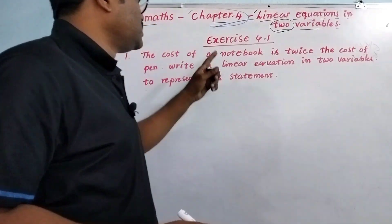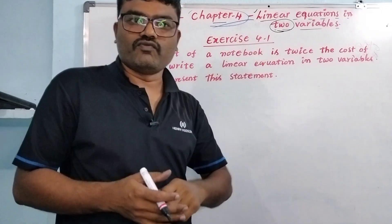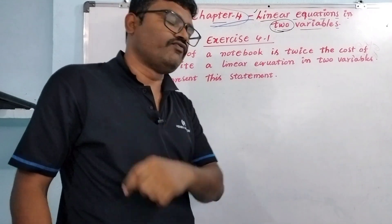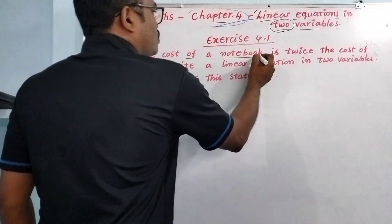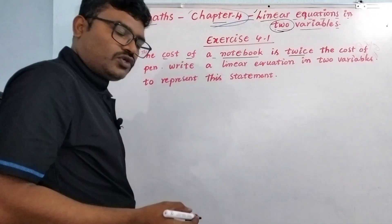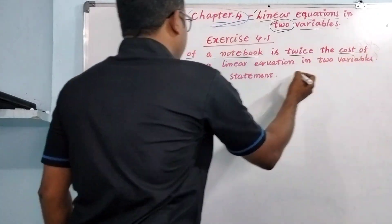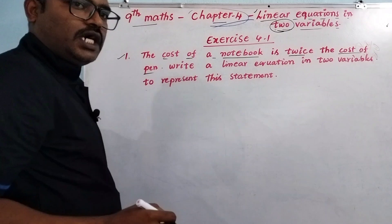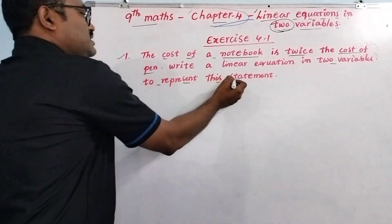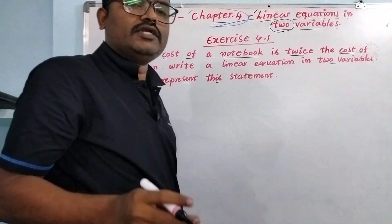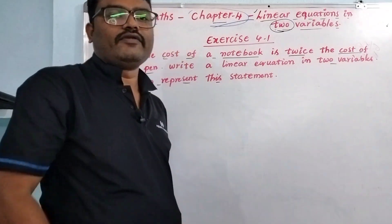Now let's see, Exercise 4.1, question number 1. The cost of a notebook is twice the cost of a pen. Write a linear equation in two variables to represent this statement and use variables as x and y.